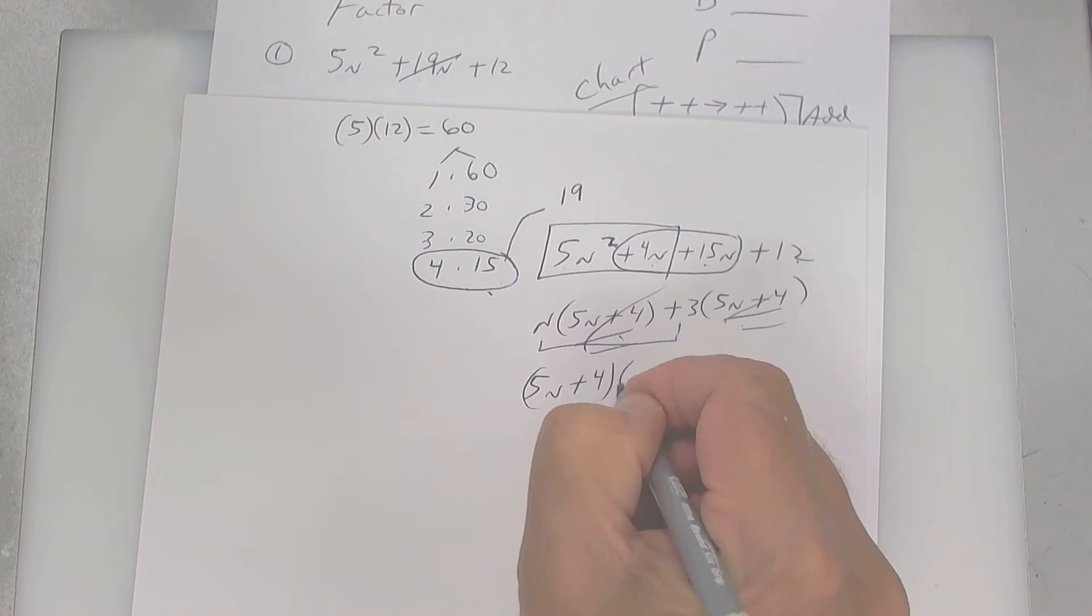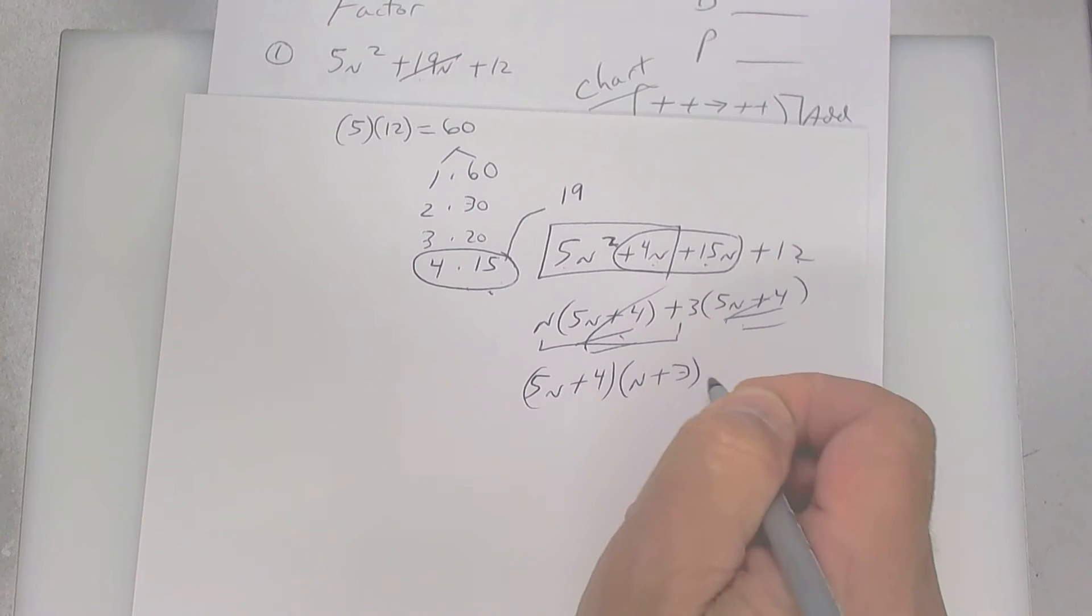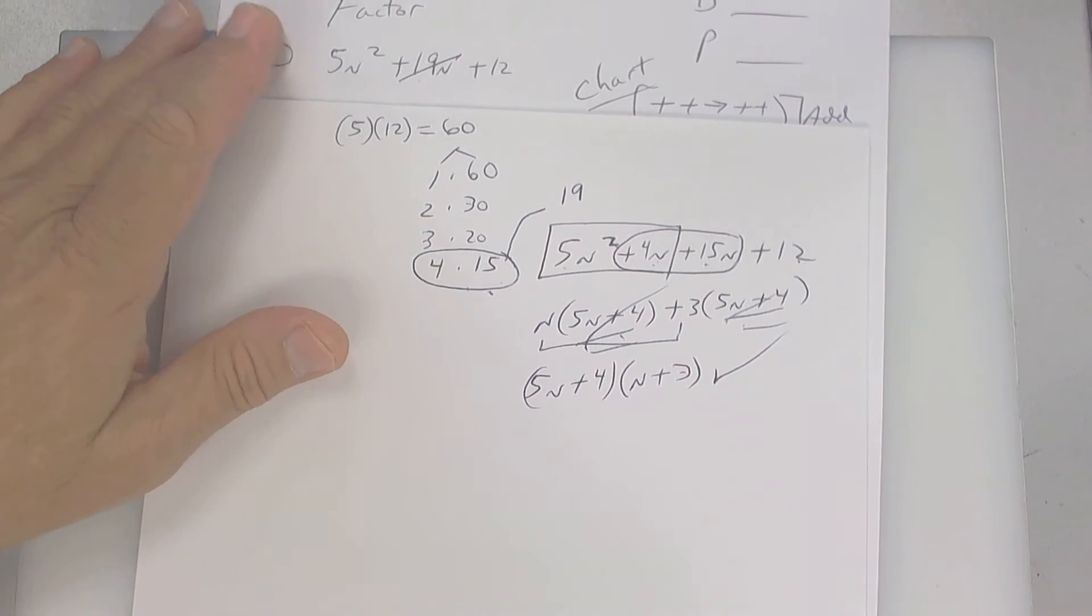And you're left with n plus 3. If you want to check it, do FOIL. That's it, that's how you do it.